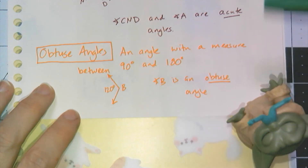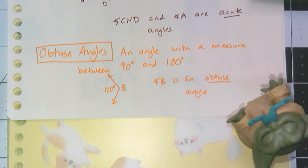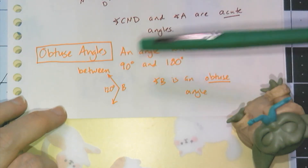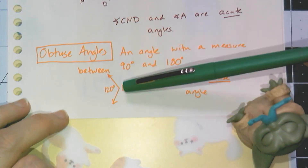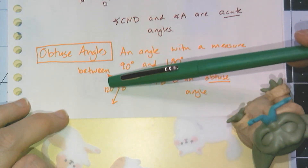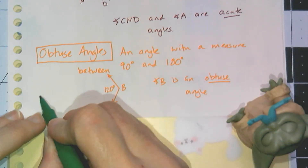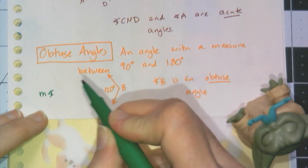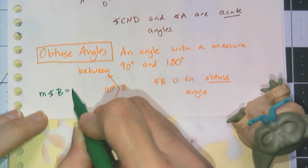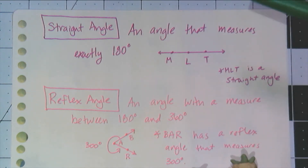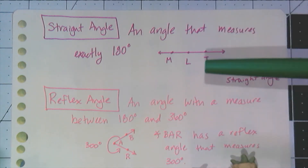We also have obtuse angles, which contrast with acute angles. Obtuse angles have a measure between 90 and 180 degrees. So angle B here is obtuse because its measurement is 120 degrees. If I put it in a sentence statement — 'measure of angle B equals 120 degrees' — anyone reading that knows by definition that angle B is obtuse. Now there are more than just right, acute, and obtuse angles; there are two more we're going to talk about.